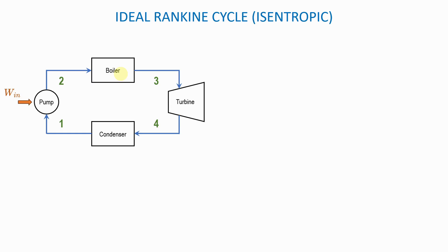The purpose of the boiler is to boil the water. So the boiler will add heat to the water — Q-in means that heat is added to the water, and that is exactly what the boiler does. The boiler will add heat to the water until the water begins to boil and it becomes steam. After the boiler, usually what you will have is superheated steam. So here at three, the water is no longer liquid; as it went through the boiler, it was turned to superheated steam.